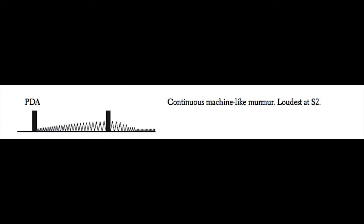A patent ductus arteriosus gives a continuous or machine-like murmur, and generally this murmur is loudest at the S2 point. Heart murmurs due to valvular defects on the right side of the heart generally increase in intensity on inspiration, whereas heart murmurs from the left side of the heart due to valvular defects increase in intensity on expiration.